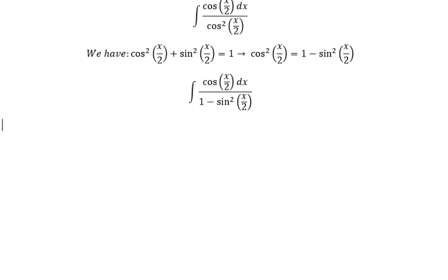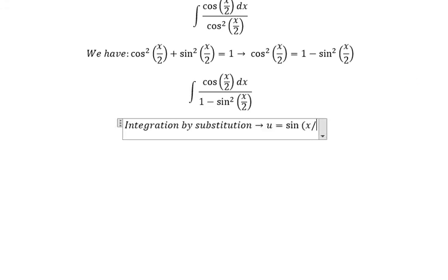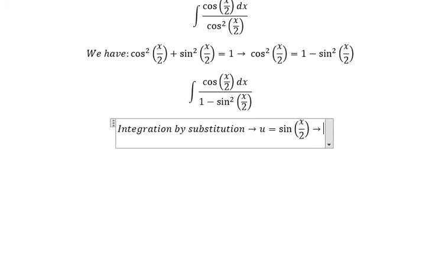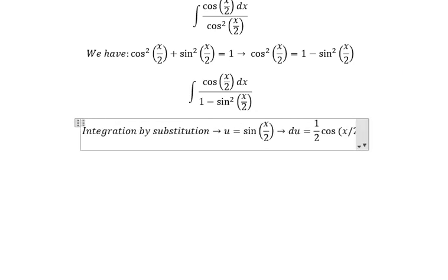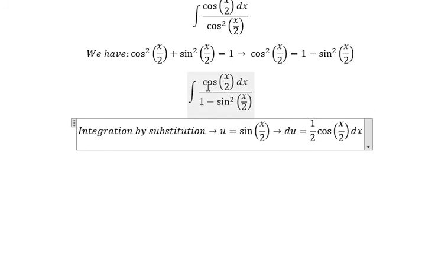Now we can use integration by substitution. So we put u equal to sin(s/2), du equal to 1/2 cos(s/2) ds. Because we don't have a 1/2 we need to multiply both sides with 2.